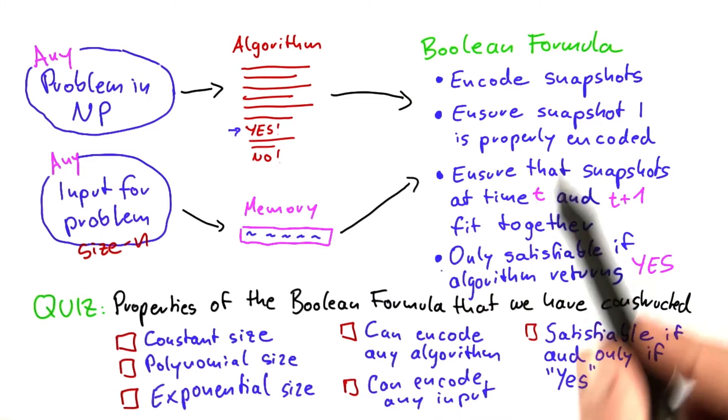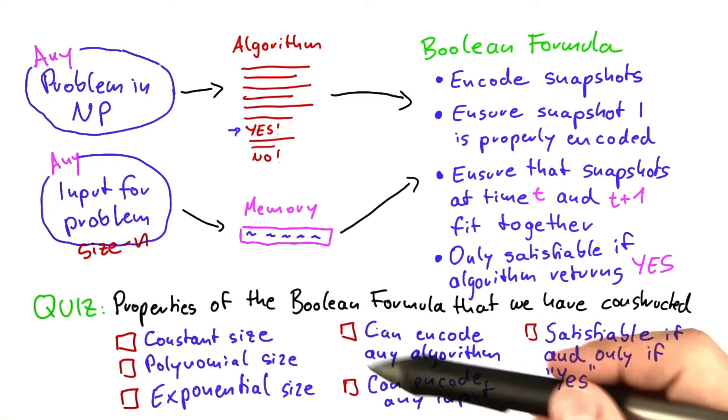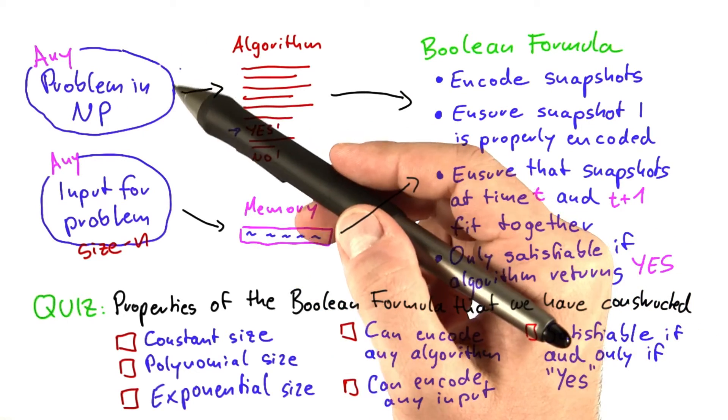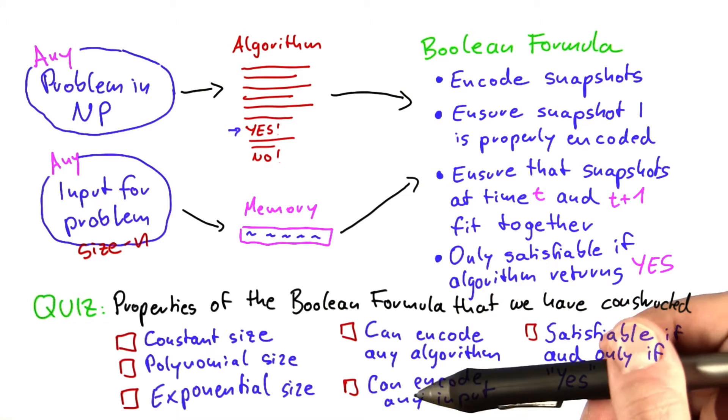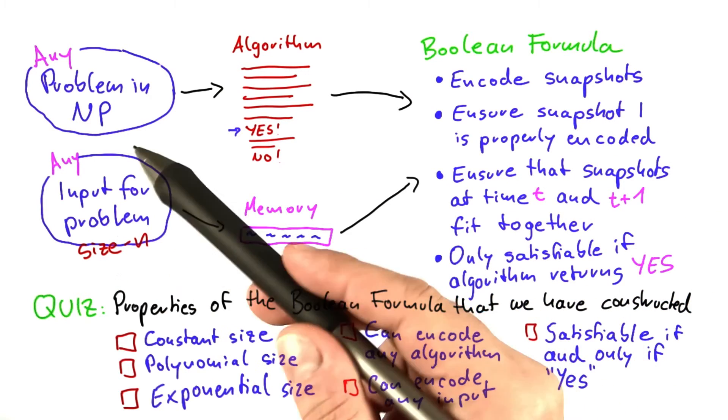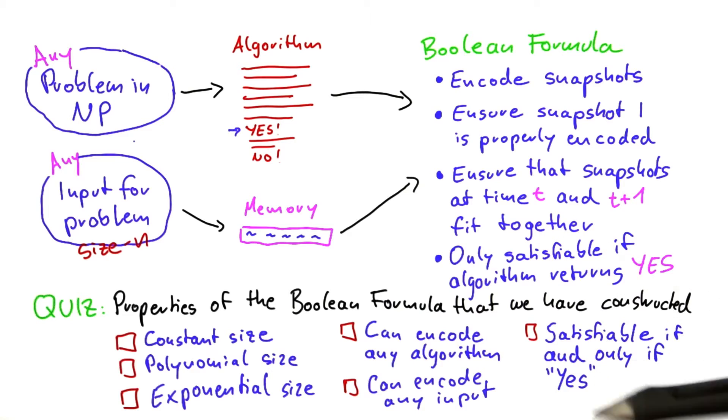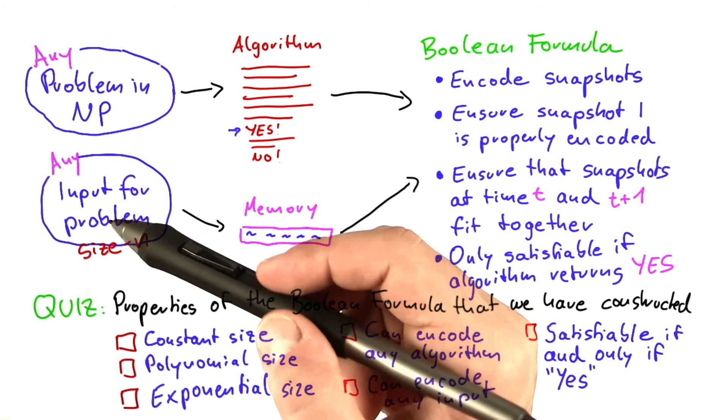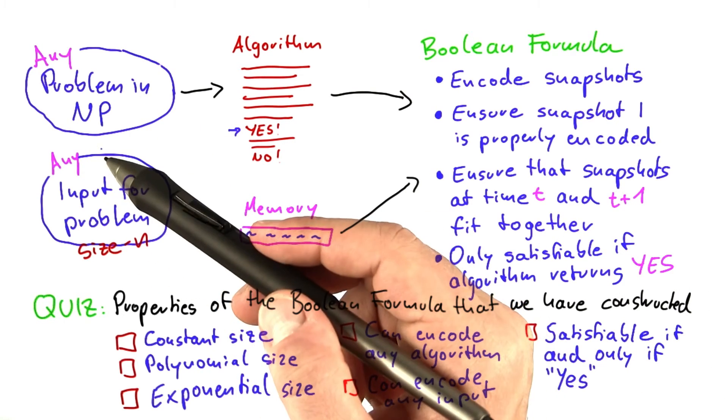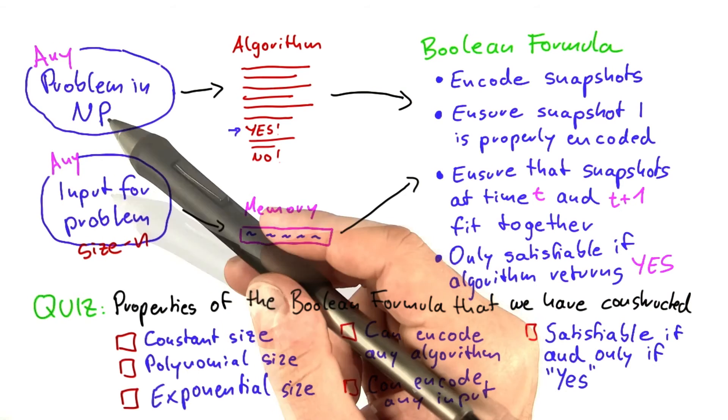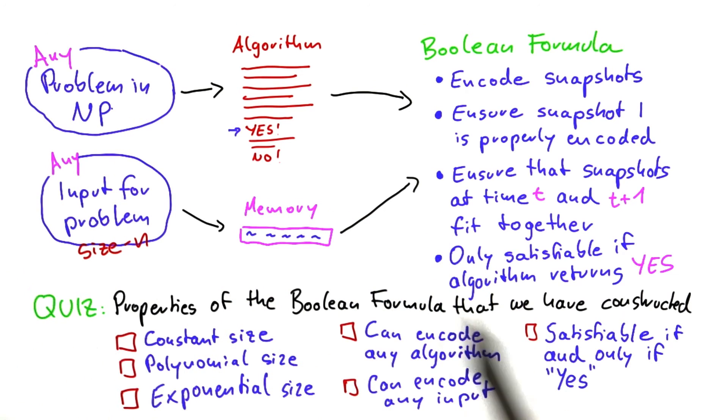And then can this Boolean formula encode any algorithm, at least for a problem that is in NP? Can it encode any input of size n that were given to that problem? And finally, is this Boolean formula only satisfiable if the input here is a yes to that decision problem here? Or are there any other cases where we could also have satisfiability? So please check all of these that are true.